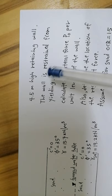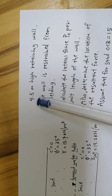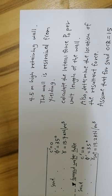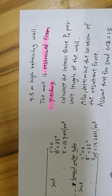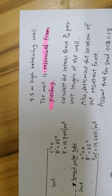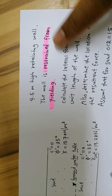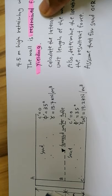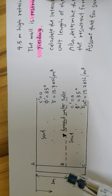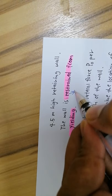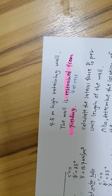The given retaining wall is 4.5 meters, and the wall is restrained from yielding — meaning the wall cannot move either to the left or right of its original position. This is the clue: it means we have to calculate for at-rest earth pressure.